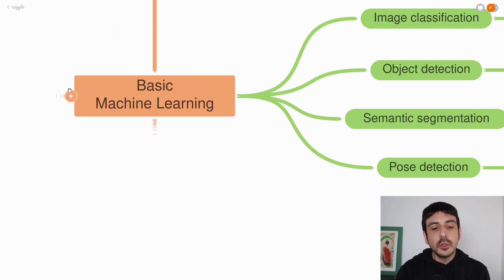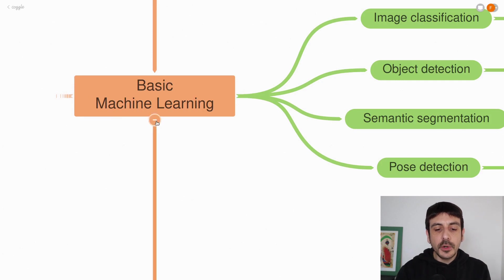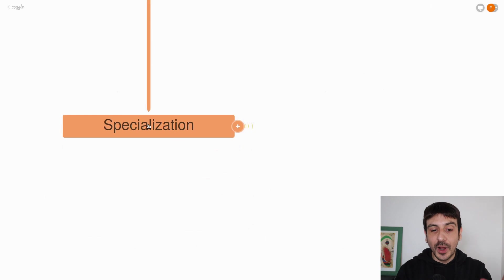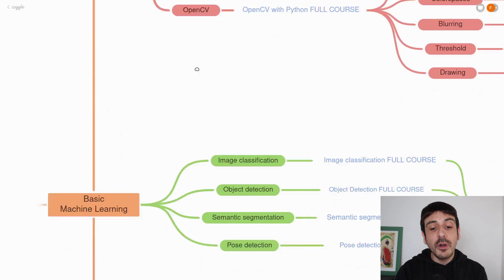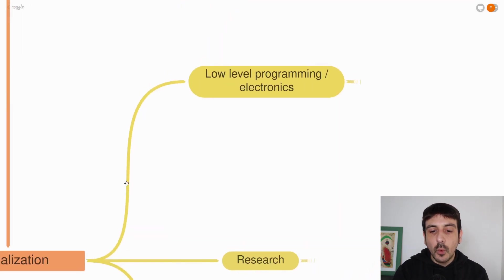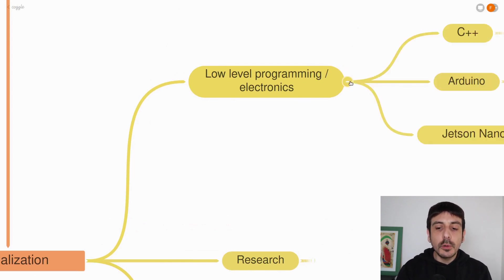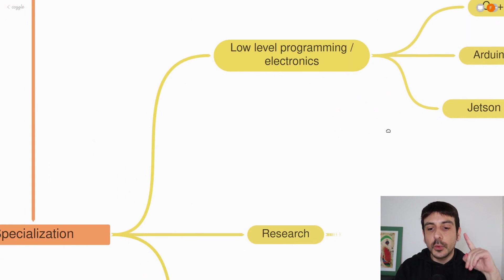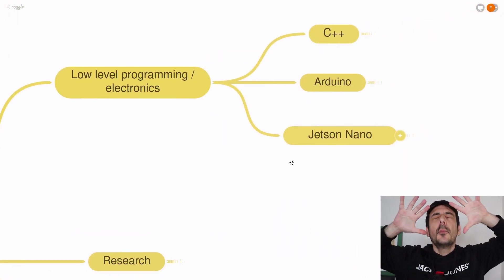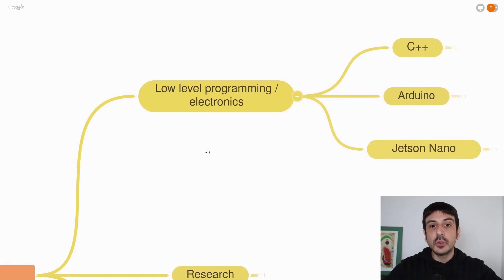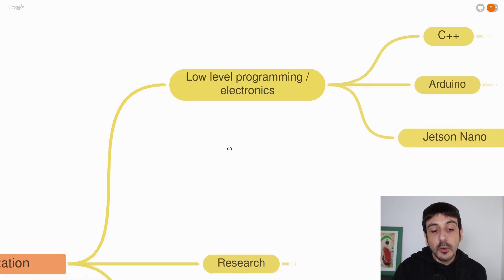From basic machine learning, you can take either one of two paths. Following the first path, we have the specialization. Now that you feel confident in Python and OpenCV and have learned the basics of machine learning, it's time to specialize. One of these different ways is low-level programming and electronics, which basically involves C++ and how to work with edge devices, for example Arduino or Jetson Nano. Although C++ is a very important programming language, you can definitely take up many projects as a computer vision engineer without doing anything related to low-level programming or electronics.